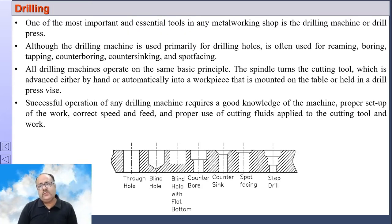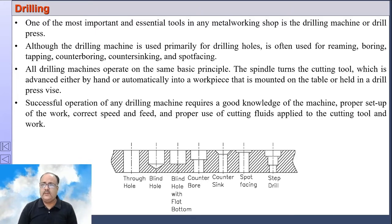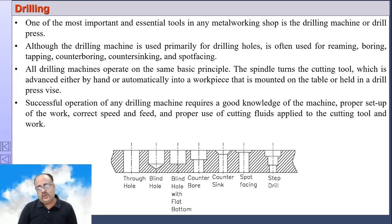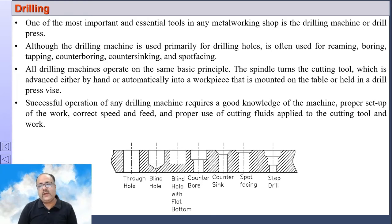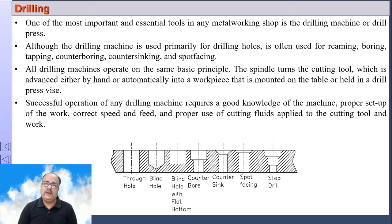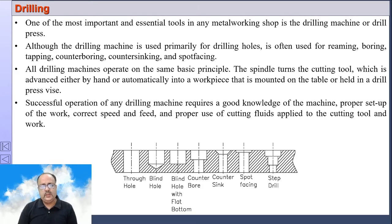Drilling is one of the most important and essential operations performed in a metalworking shop. And it is very difficult to drill a hole of exact size at exact location — it is extremely difficult to drill an exact hole at exact location. You cannot drill a perfect circular hole in a perfect location. It is impossible.